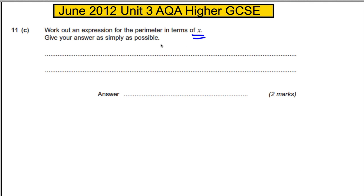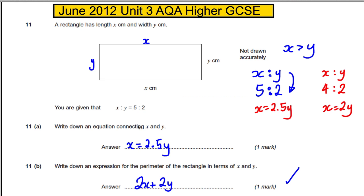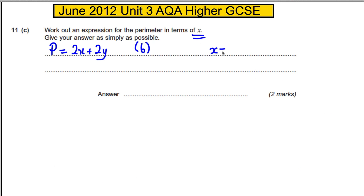Now write down the expression for the perimeter just in terms of X, giving your answer as simply as possible. The perimeter was 2X + 2Y from part B, and from part A we had X = 2.5Y. So Y must equal X divided by 2.5, which is 2/5 X, because 1 divided by 2.5 equals 2/5.